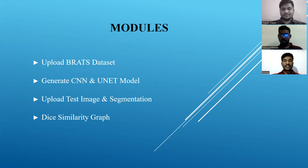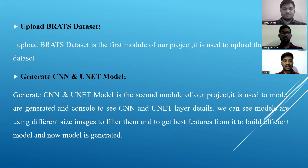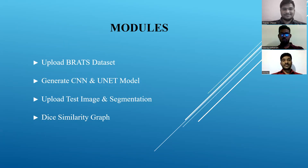Coming to our modules, we have four modules in this project. The first is uploading the dataset, then generating the CNN and U-Net model, then we upload a test image and segment those images, and finally we have the Dice similarity graph module.